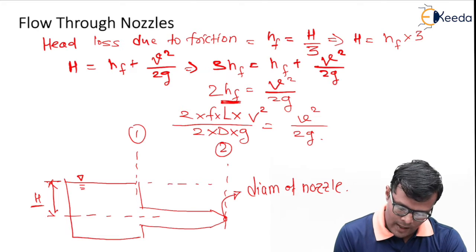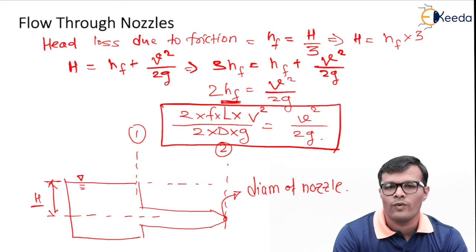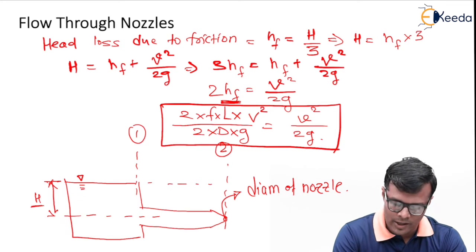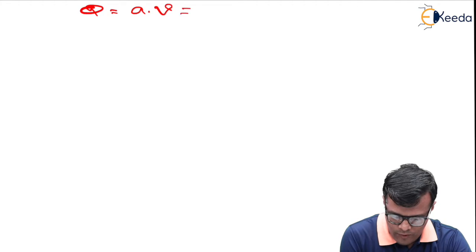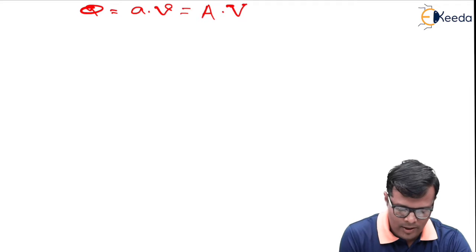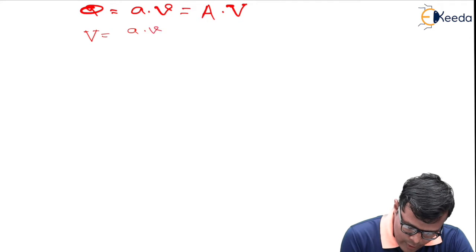We have obtained an equation in terms of two unknowns — capital V and small v — but for simplicity we can convert it to one unknown using the continuity equation. By continuity, Q equals small a times small v equals capital A times capital V. So, capital V equals small a times small v divided by capital A.